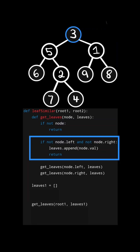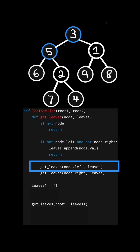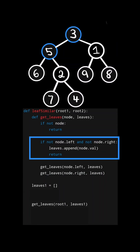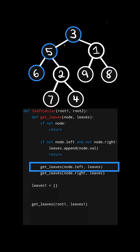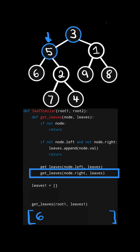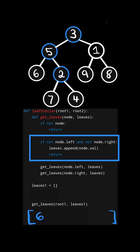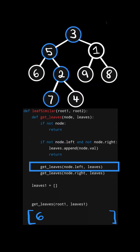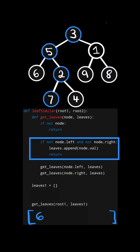We will call the function on the root node and check if it is a leaf node. It's not, so we call the recursive function on the left node. Again, this node is not a leaf node, so we call the recursive function on its left node. Now this node is actually a leaf node, so we append it to the list and simply return. We go up the stack to the previous call and recurse on its right node. That node is not a leaf node, so we first recurse on its left node. That node is a leaf node, so we append it to the list and simply return.